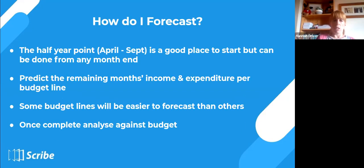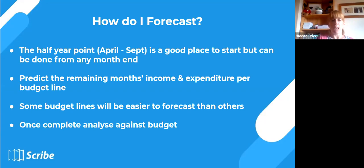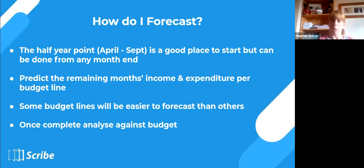At the half year point — we're in October, so we've got April to September, the first six months — it's a good place to start forecasting, though you can do it from any month end. Just as you could take the budget and add on 3%, with the forecast you could simply take your first six months, double it, and you'd have a forecast for the whole financial year. For some lines like staff costs or phone costs that are static each month, that might be perfect — but for others you'll need to think in more detail.